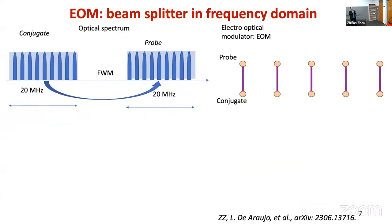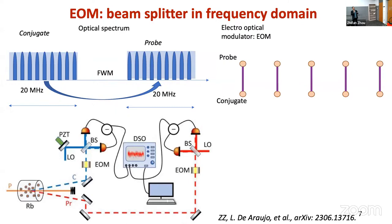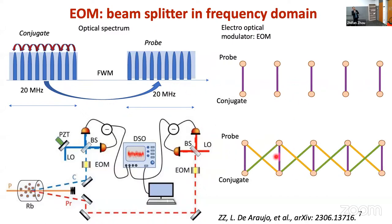Now we have this entanglement source. What we need next is the beam splitter operation. In the frequency domain, we use an electro-optical modulator (EOM), which is easy to implement — we just put a free-space EOM into the path of our entanglement source. By keeping the modulation intentionally small to avoid high-order modulation, the EOM can shuffle entanglement between neighboring modes. From this independent entanglement situation, we create an interconnection situation. With one frequency driving, we have a simple one-dimensional entanglement structure. We have to keep the modulation small.